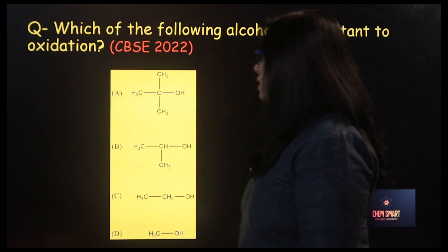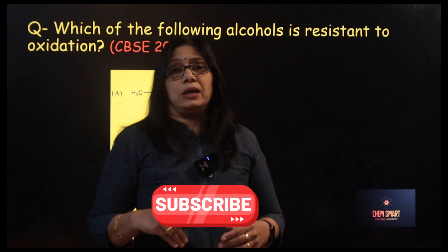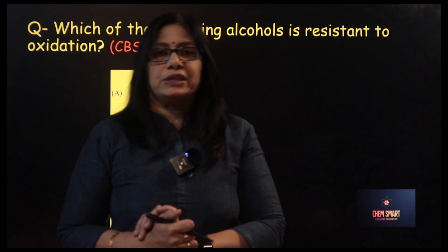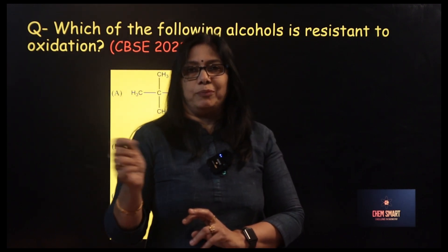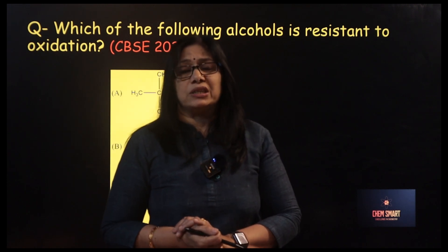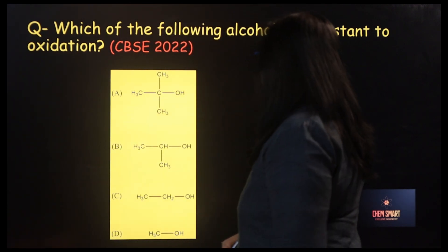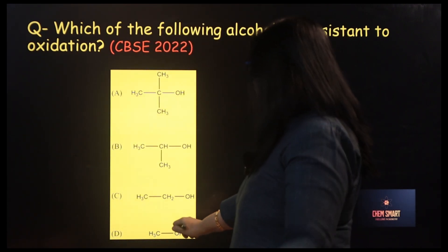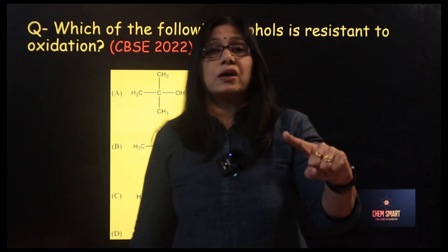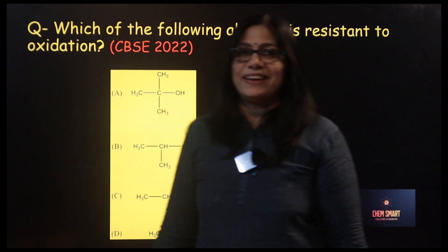Which of the following alcohols is resistant to oxidation? The ease of oxidation of alcohols follows: primary > secondary > tertiary. Tertiary alcohol is the most difficult to oxidize. So you just have to find which is the tertiary alcohol. Here, one is methanol (primary), one secondary, one tertiary. Tertiary alcohol is difficult to be oxidized, so the answer is option A.